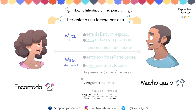So, if you remember, we went over the demonstrative pronouns: estos, estas, este, esta — meaning 'this' and 'these.' Este is masculine singular, esta is feminine singular, estos is masculine plural, and estas is feminine plural.